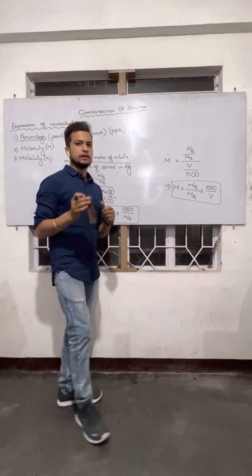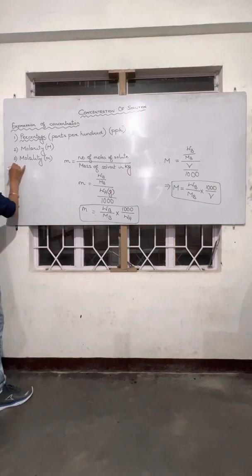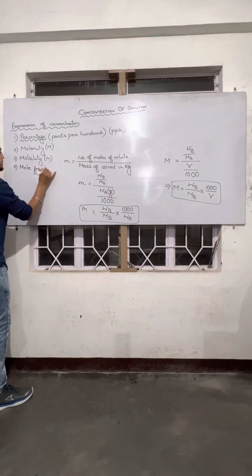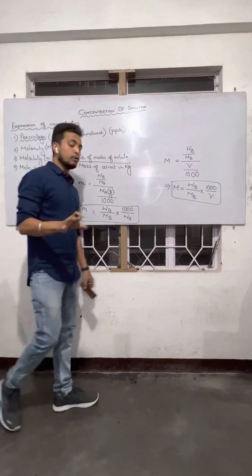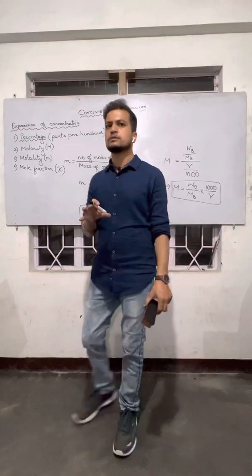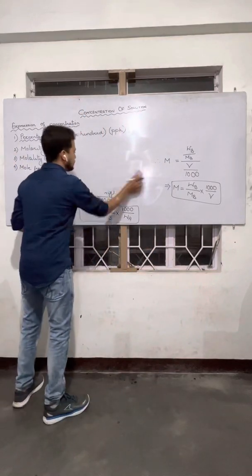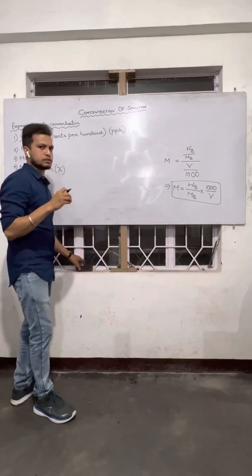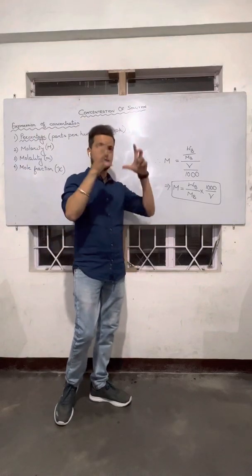The final way of expressing concentration is mole fraction. By the name itself — fraction of moles. Whenever we talk about mole fraction, it is a fraction of number of moles — basically a ratio. We are talking about the ratio of number of moles of solute to the total number of moles. That fraction is nothing but mole fraction.